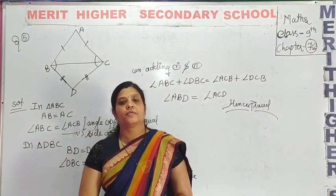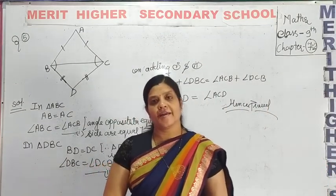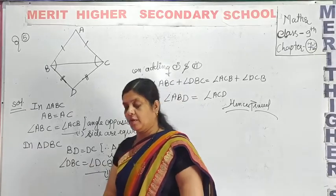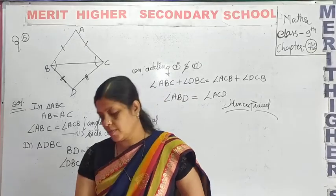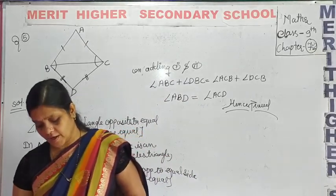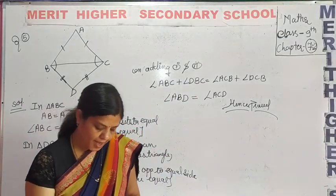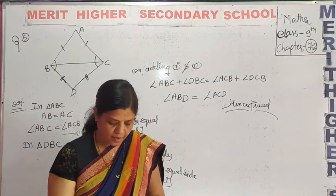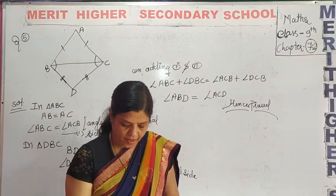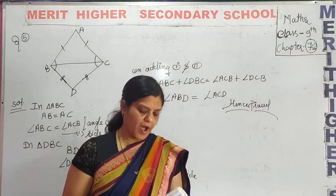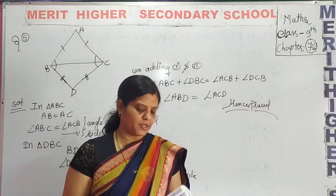Hello students, today we are explaining question number 5. The question states that ABC and DBC are two isosceles triangles.